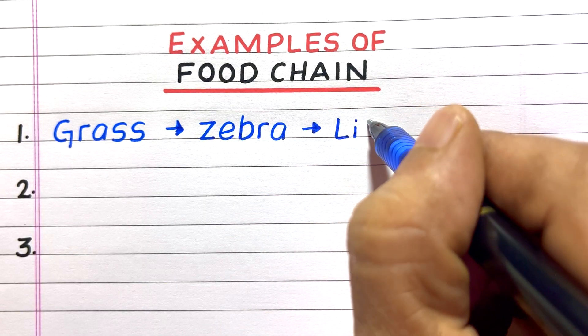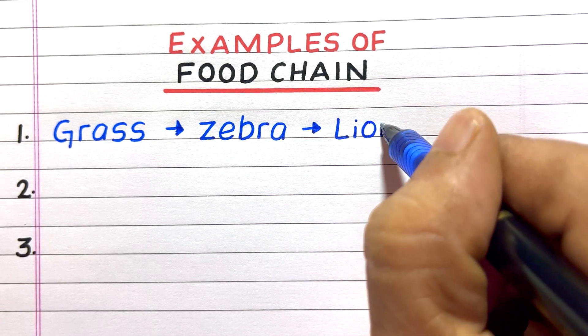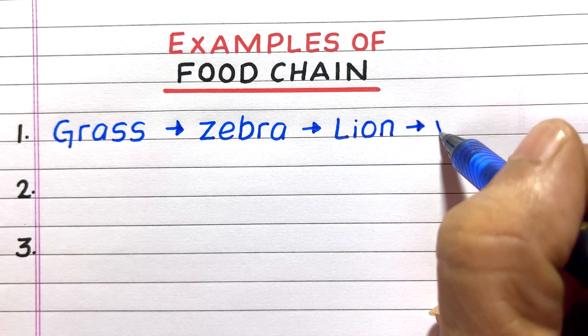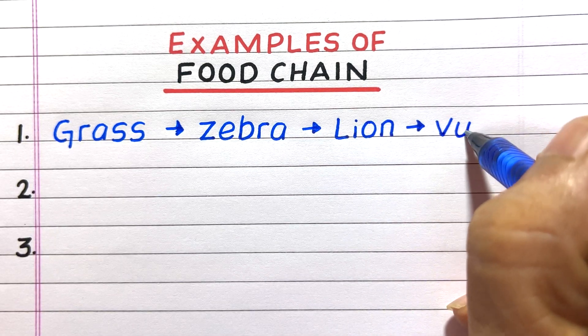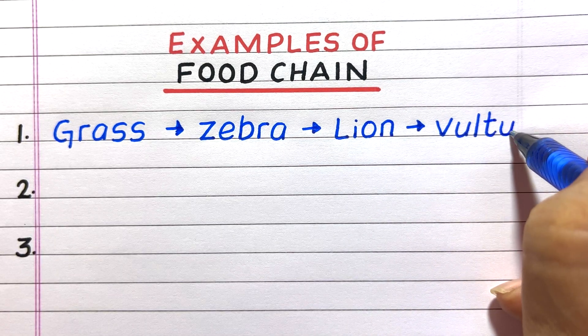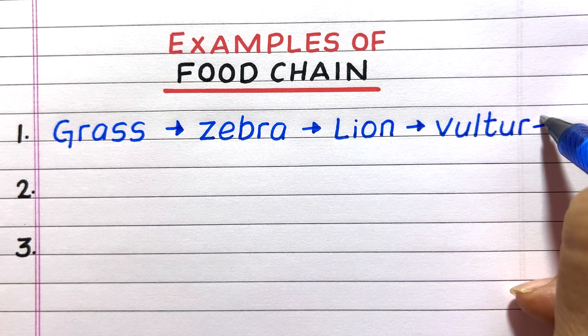First example of a food chain is: grass, zebra, lion, vulture.